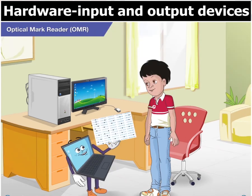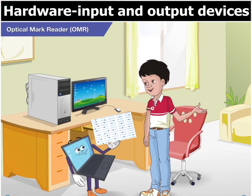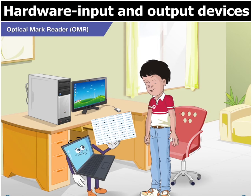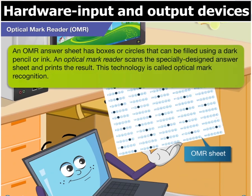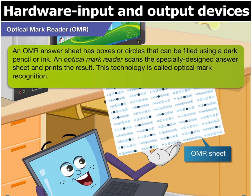Have you seen this sheet? I once filled up the answers to a quiz competition on such a form. Such forms are commonly used in multiple choice examinations or quizzes. The boxes or circles are filled using a dark pencil or ink to indicate the answers. This sheet is then fed into an Optical Mark Reader which scans and prints the result.